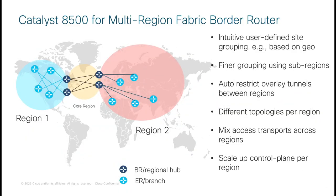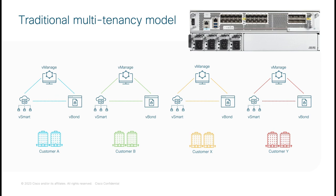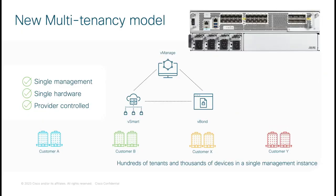Cisco SD-WAN now supports multi-region fabrics, and the C8500 20X6C router is well-positioned for the role of inter-regional hub, with the necessary bandwidth, interface diversity, and IPSec capability for secure connectivity. When this diverse connectivity is enabled in a co-location facility where space is at a premium, the 3RU size is a key advantage. With the latest support for multi-tenancy SD-WAN, the C8500 20X6C can consolidate a large number of customers into a single platform, simplifying network topology and significantly reducing the physical footprint required to service multiple customers by optimizing real estate, power usage, and cooling.